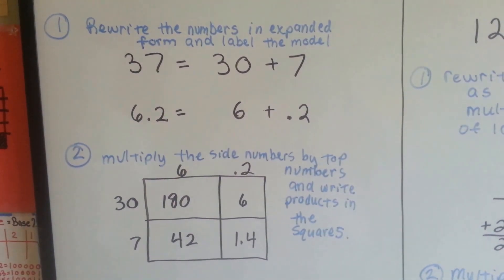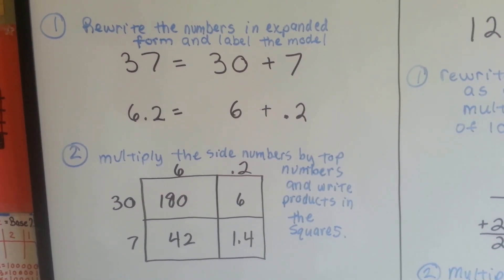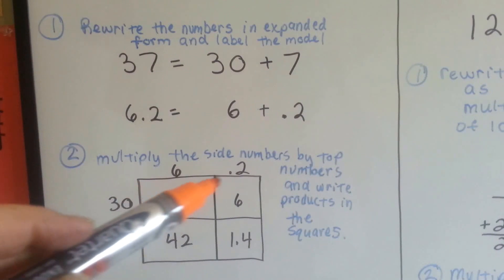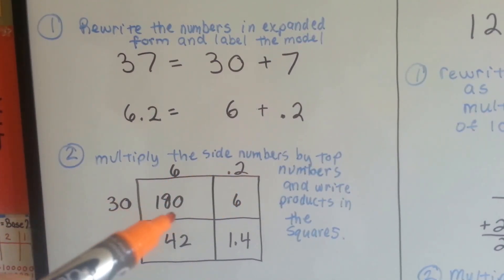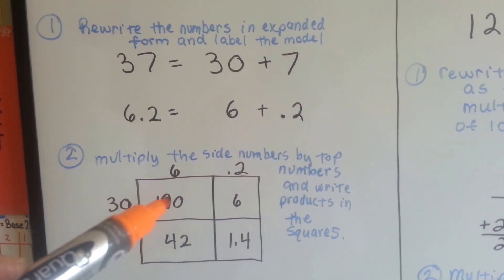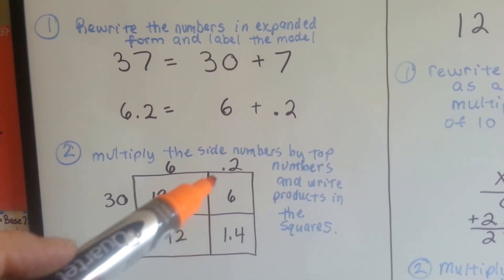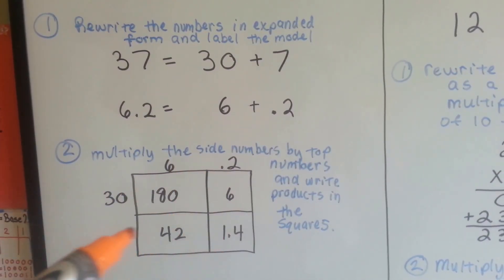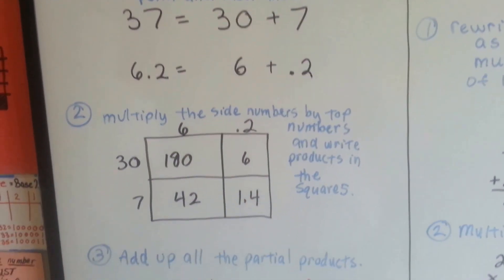We would multiply the side numbers — the 30 and the 7 — in expanded form by the 6 and the 2 tenths on the top. 30 times 6 is 180. 7 times 6 is 42. 30 times 2 tenths is 6. And 7 times 2 tenths is 1 and 4 tenths.